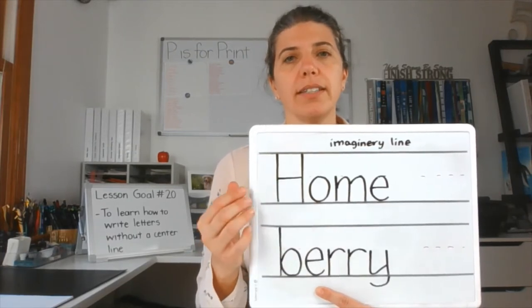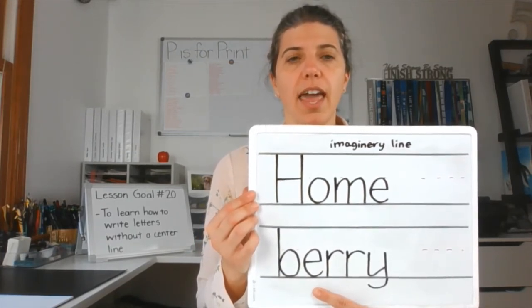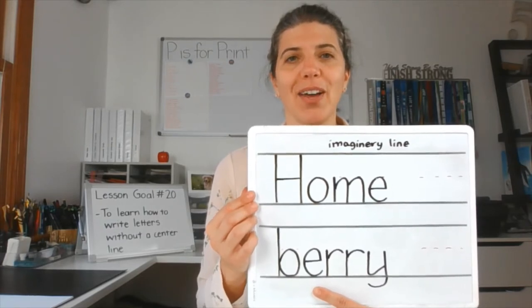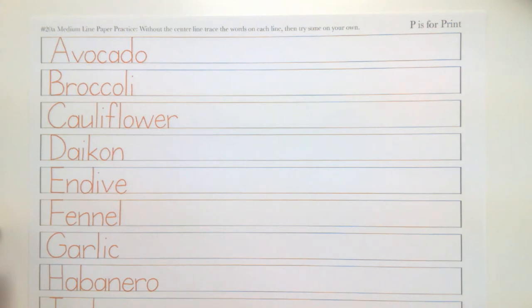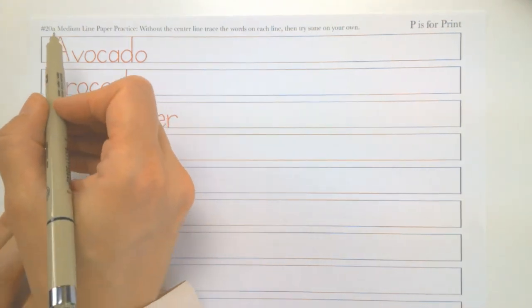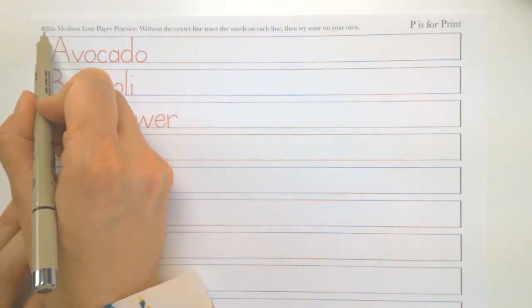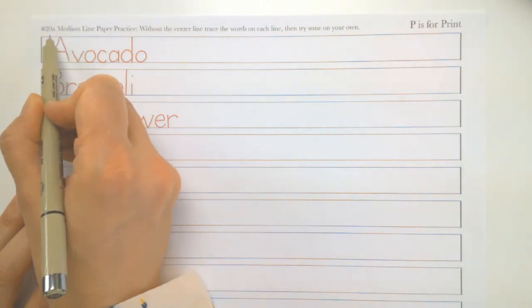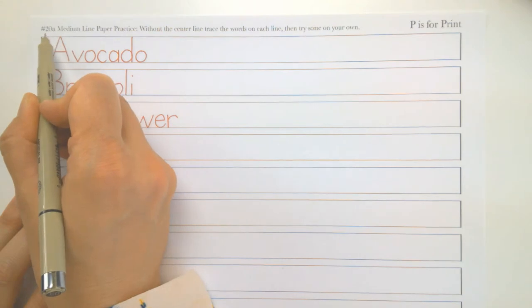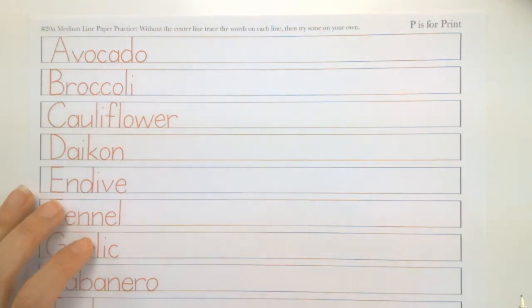We're going to practice. I have lots of practice sheets for us today and hopefully we can do some together. Hopefully you have, there's a lot for 20. We have 20A is going to be your medium, 20B is your small and then 20C is your wide rule. So there's plenty of sheets for today. This was probably going to be a two or three day lesson.